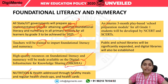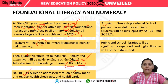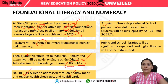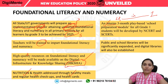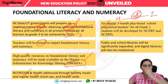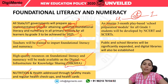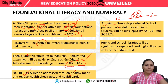The fifth point is that an interim three-month play-based school preparation module for all grade one students will be developed by NCERT and SCERTs. Interim means the period between kindergarten and entering first standard. So in this interim period, a three-month play-based school preparation module will be prepared before entering formal school education.